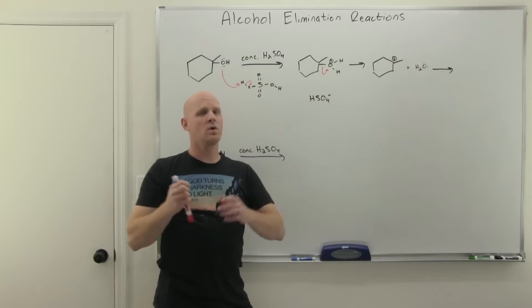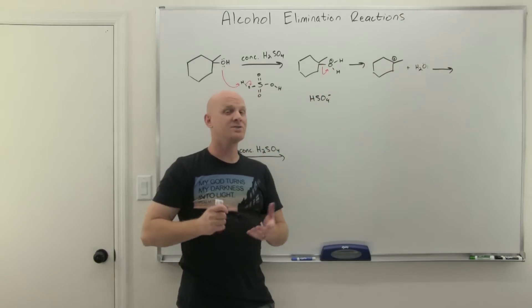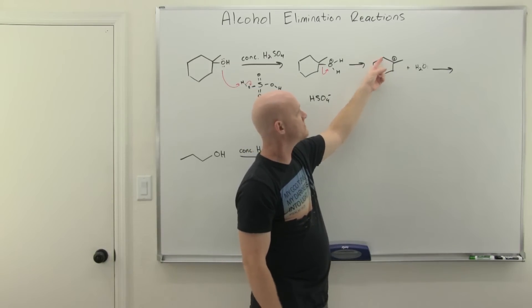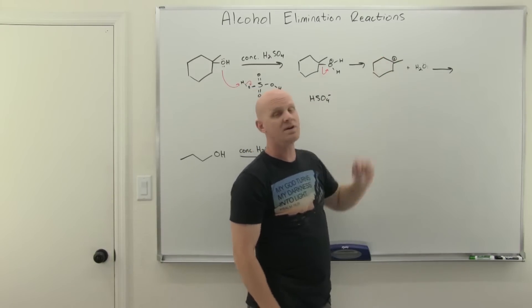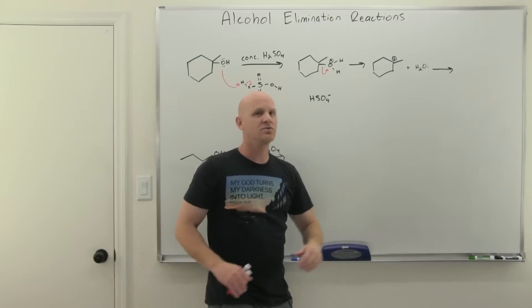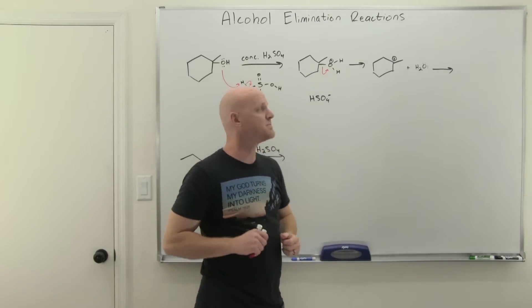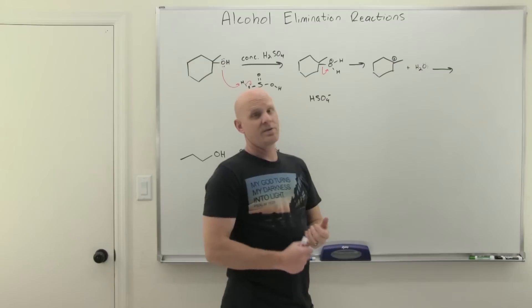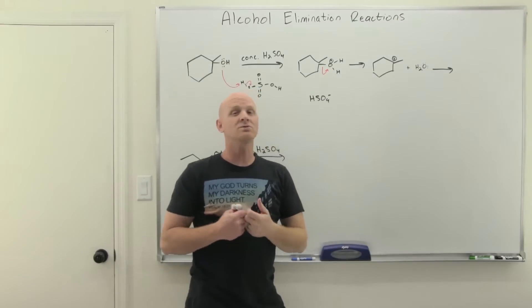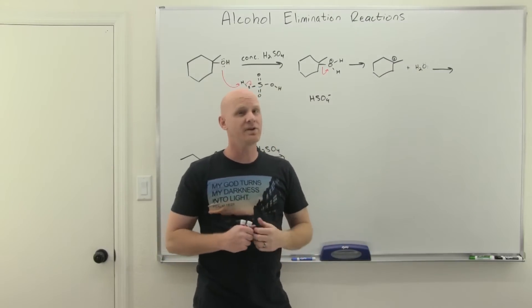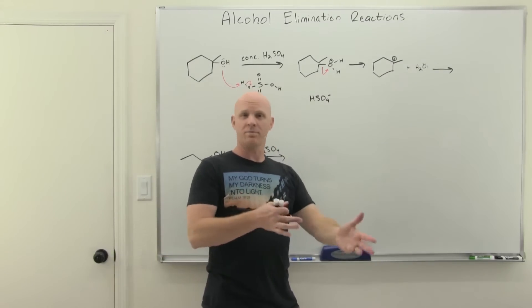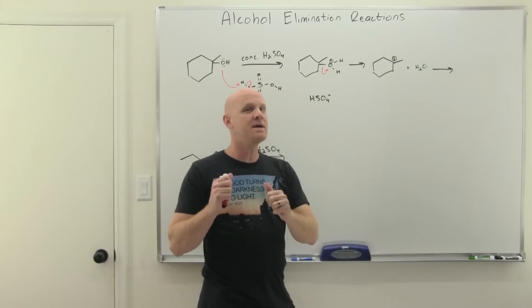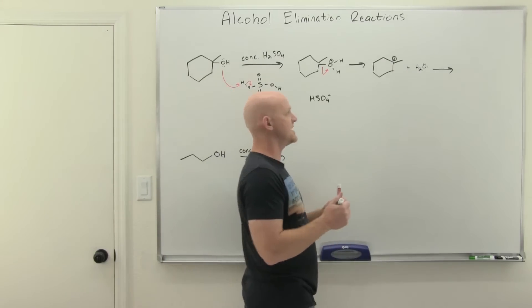We've got our carbocation. Just like normal, if you've got a carbocation you should check for rearrangements. Ours in this example happens to be tertiary, and the three adjacent carbons would not be more stable, so we're not going to get any rearrangement here — but it is something that is possible. With H2SO4 you're always going to follow Zaitsev's rule to get the major product. You'll form some minor anti-Zaitsev or Hofmann product too, but the major follows Zaitsev's rule every time.